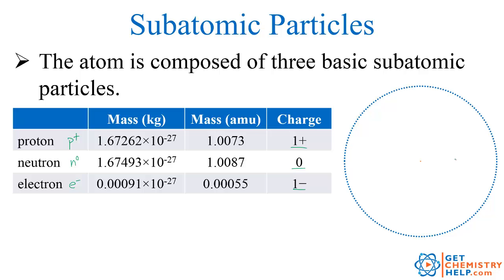So where do these particles live? In the nucleus here, this is where the protons and the neutrons live. Surrounding the nucleus we have the electrons, which are orbiting around it similar to the way planets would orbit around a Sun. We'll see in later videos the various orbits these electrons can take.